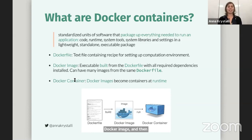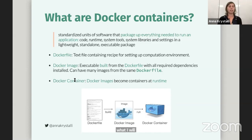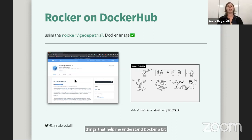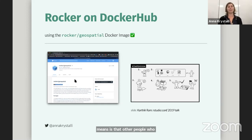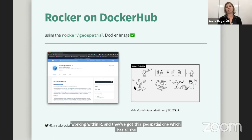I'll be the first to say I am not an expert in Docker at all — I just know what I need to get by. But a couple of things helped me understand Docker a bit better. One of them is that you can use other people's base images as the start of your own. This means that other people who know what they're doing can create Docker images that other people can use and build on top of. This is what the rocker project is — they curate a collection of Docker images for working with R, and in particular they've got a geospatial one which has all the libraries we need to work with geospatial analysis, giving us that happy experience.